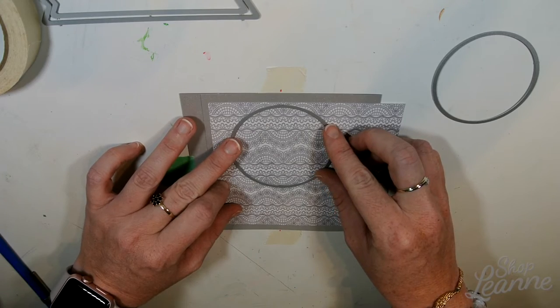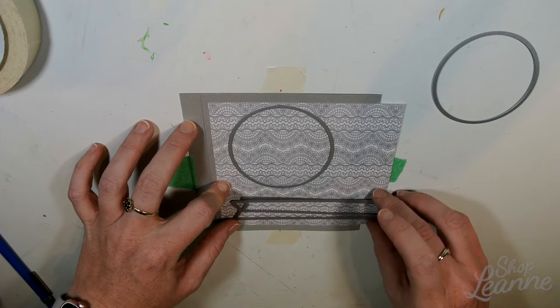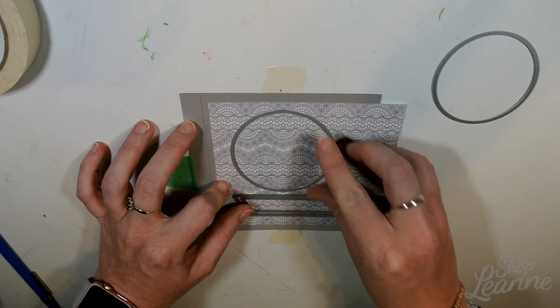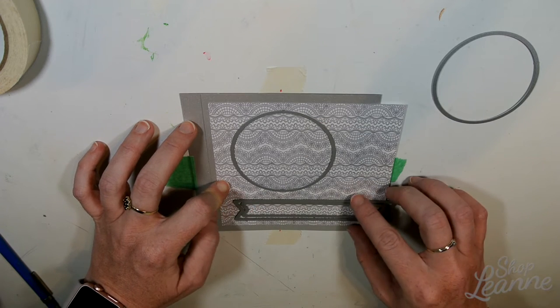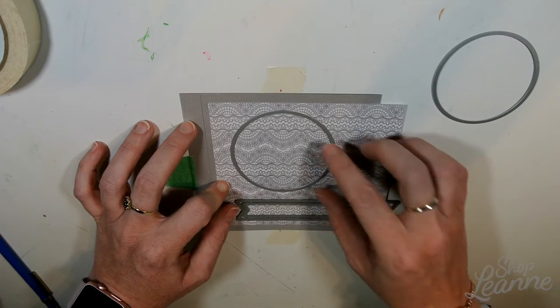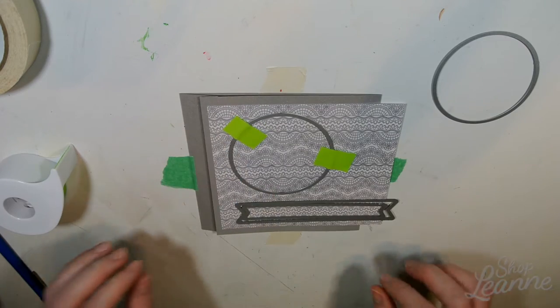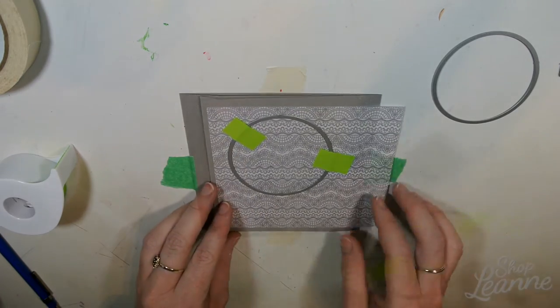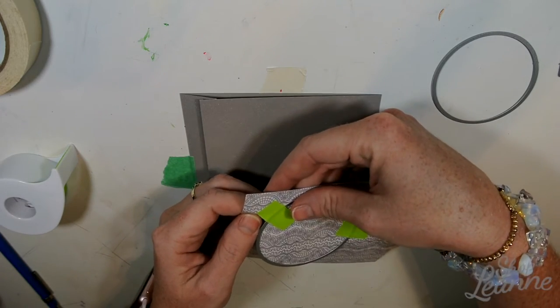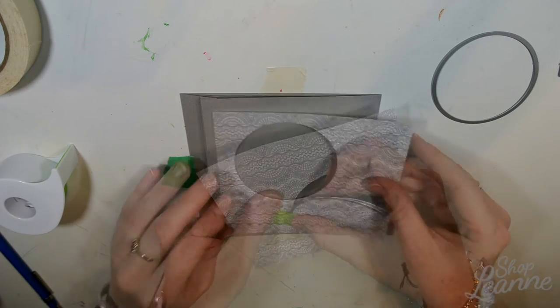Now I'm going to create the little peephole that my little chicks are going to sit in, and the sentiment banners as well. I'm making sure that where I place the circle template still leaves enough room for the banners at the bottom. These are the everyday sentiment banners from Lawn Fawn.